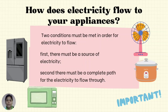Two conditions must be met in order for electricity to flow. First, there must be a source of electricity. Second, there must be a complete path for the electricity to flow through.